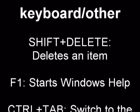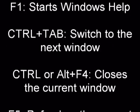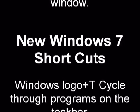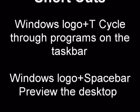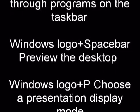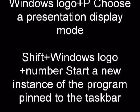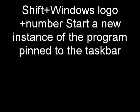Under keyboard shortcuts and other: Shift+Delete deletes an item, F1 starts Windows help, Ctrl+Tab switches to the next window on your start menu, Ctrl+Alt+F4 closes the current window, F5 refreshes the current window — usually in Internet Explorer. For Windows 7 shortcuts: Windows logo+T cycles through programs in the taskbar, Windows logo+Spacebar previews the desktop, Windows logo+P chooses a presentation display mode if you have multiple monitors. Shift+Windows logo plus a number starts a new instance of the program pinned in the taskbar.